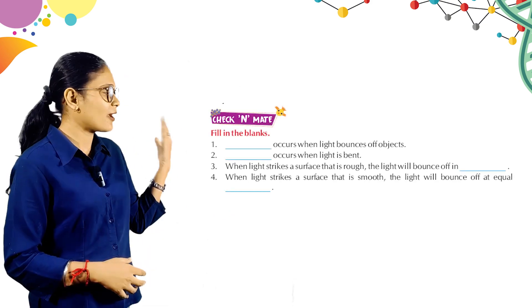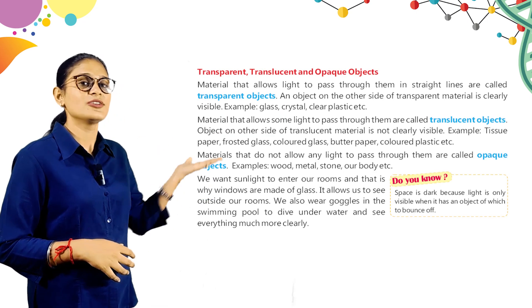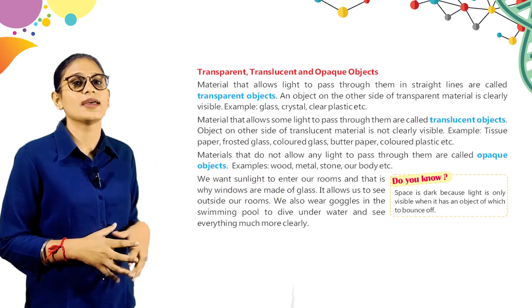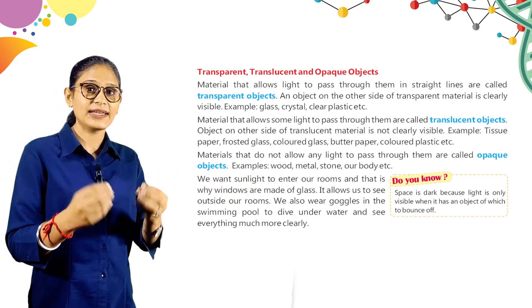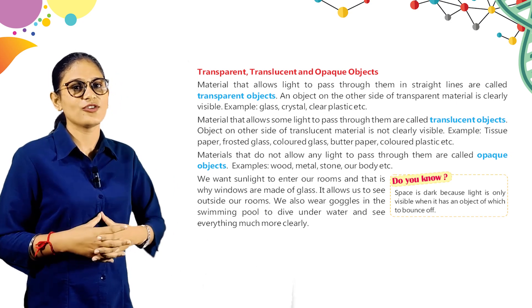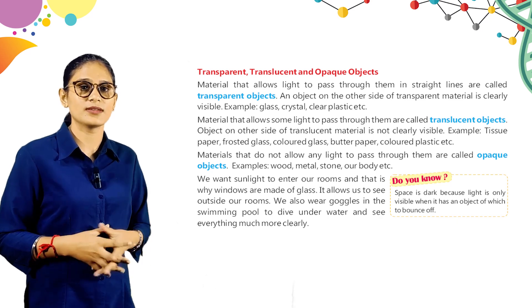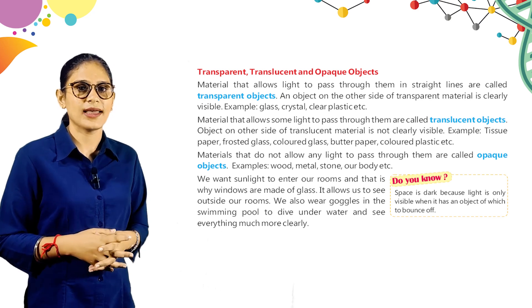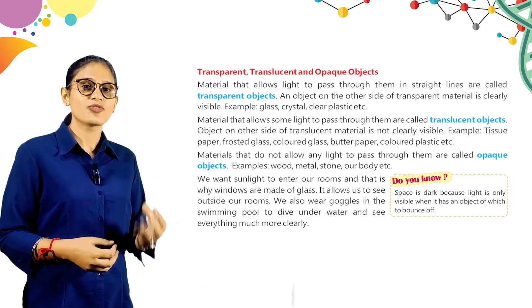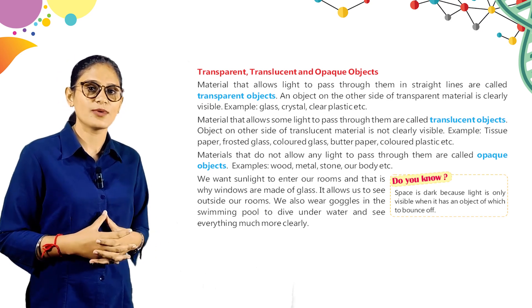Here are transparent, translucent, and opaque objects. Materials that allow light to pass through them in a straight line are called transparent objects. An object on the other side of a transparent material is clearly visible. Examples: glass, crystal, clear plastic, etc.